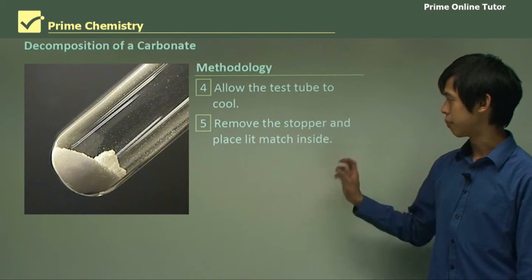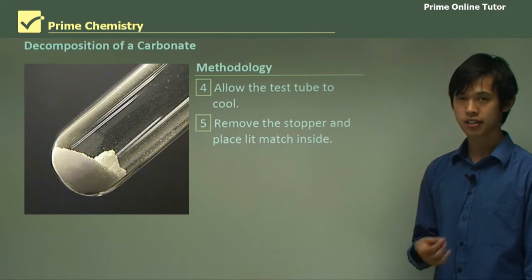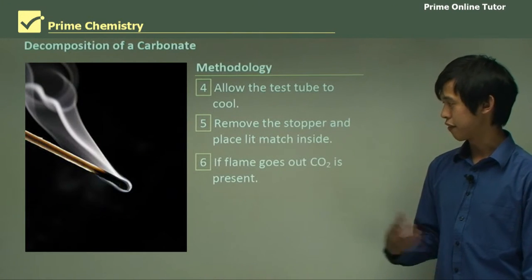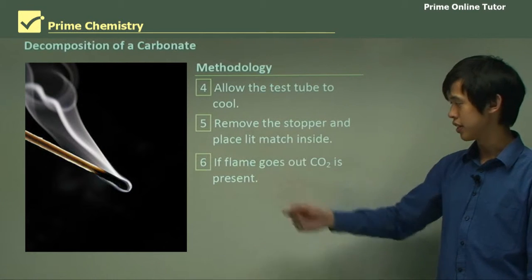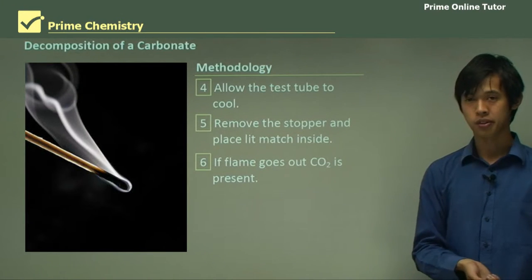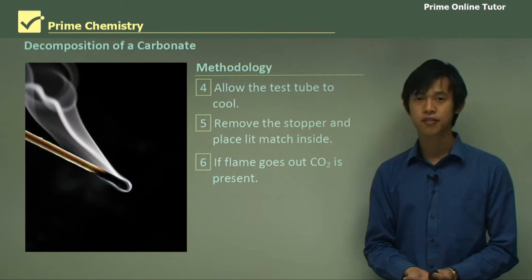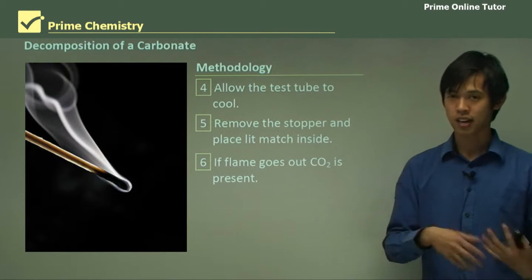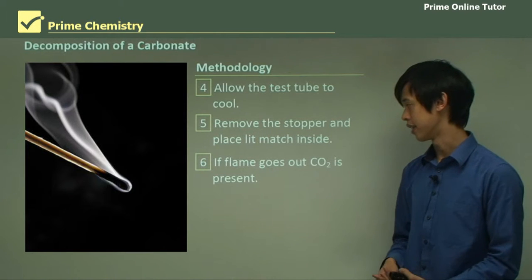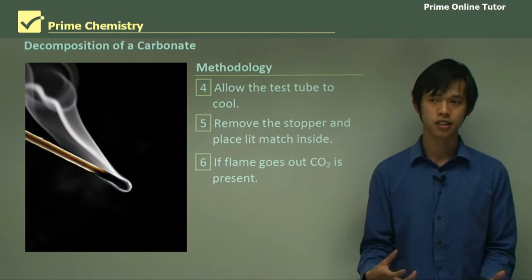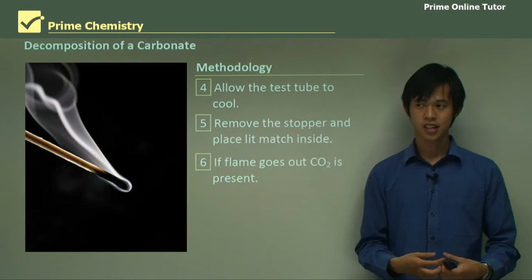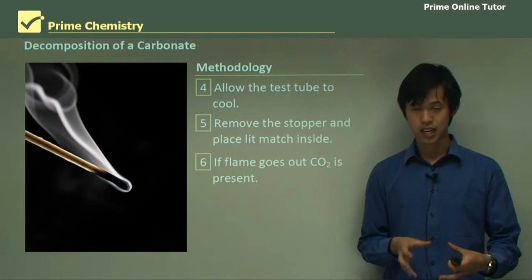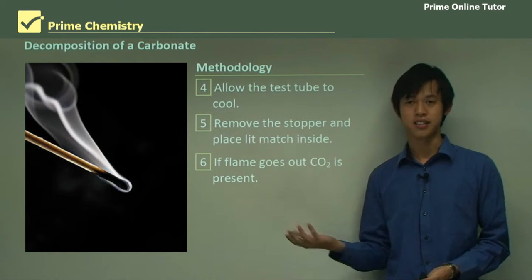Remove the stopper and place the lit match inside, so that's our next step. And if the flame goes out, as in this picture, then CO2 is present. So that's like that burning splint test for oxygen, it's just the opposite of that. A lit match will get put out by the carbon dioxide. And that makes sense, right? Because you see carbon dioxide fire extinguishers, so if there's carbon dioxide present, it will hopefully put out this flame.